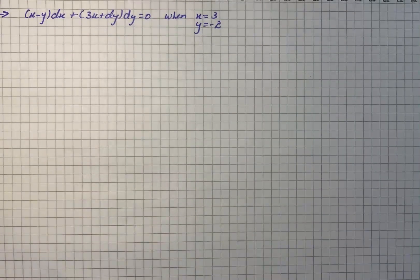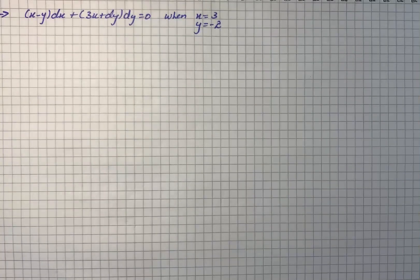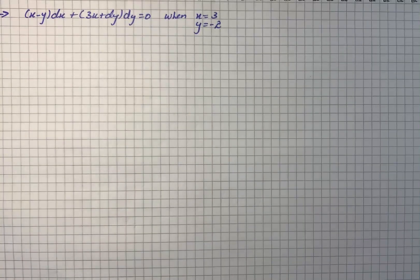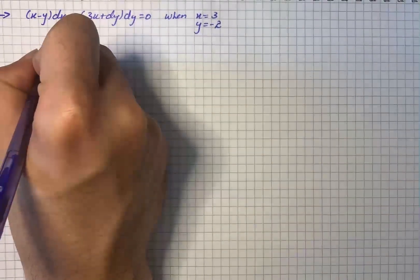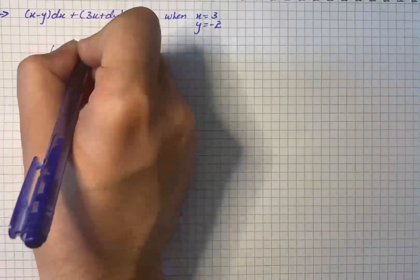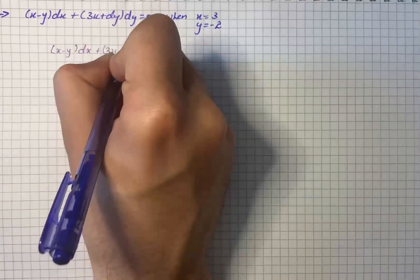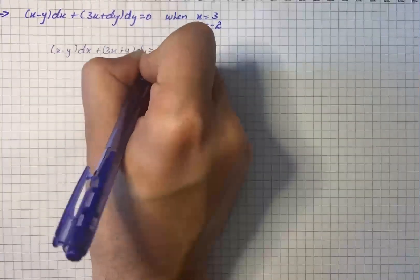Here we have an equation to solve. The equation is (x minus y) dx plus (3x plus y) dy equals 0, where x is equal to 3 and y is equal to minus 2. We will work with this differential equation under those initial conditions.